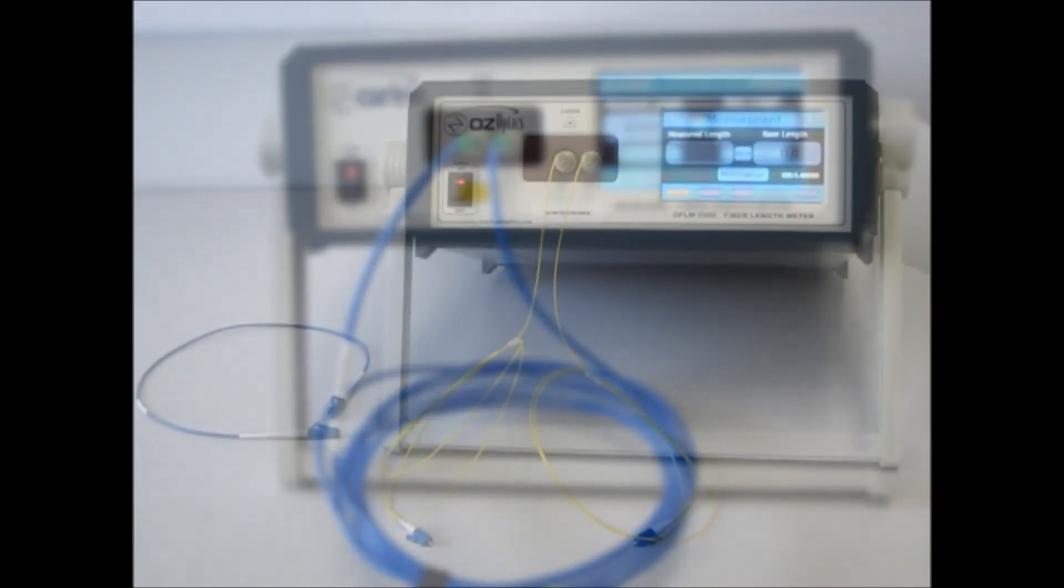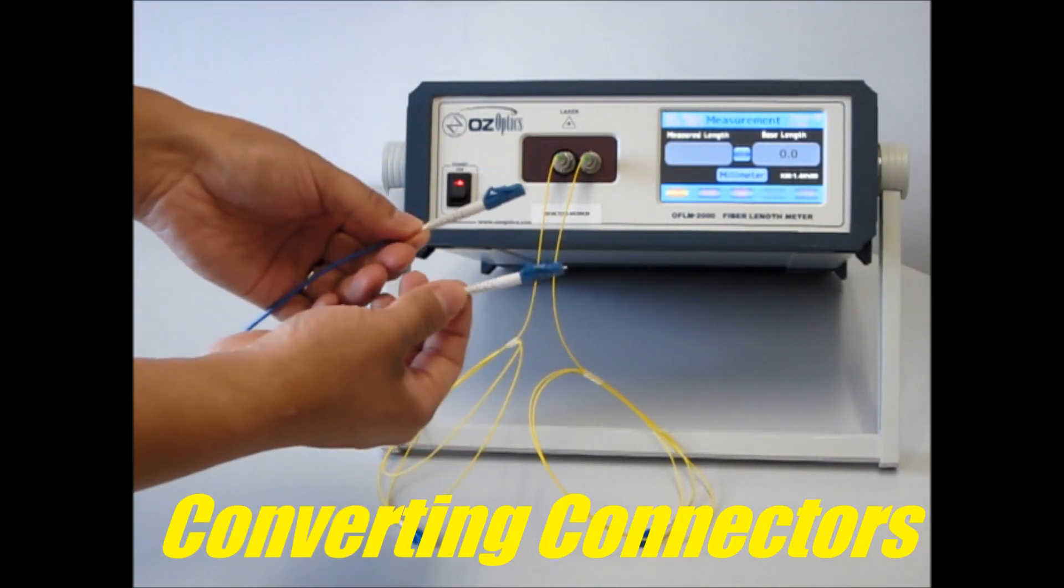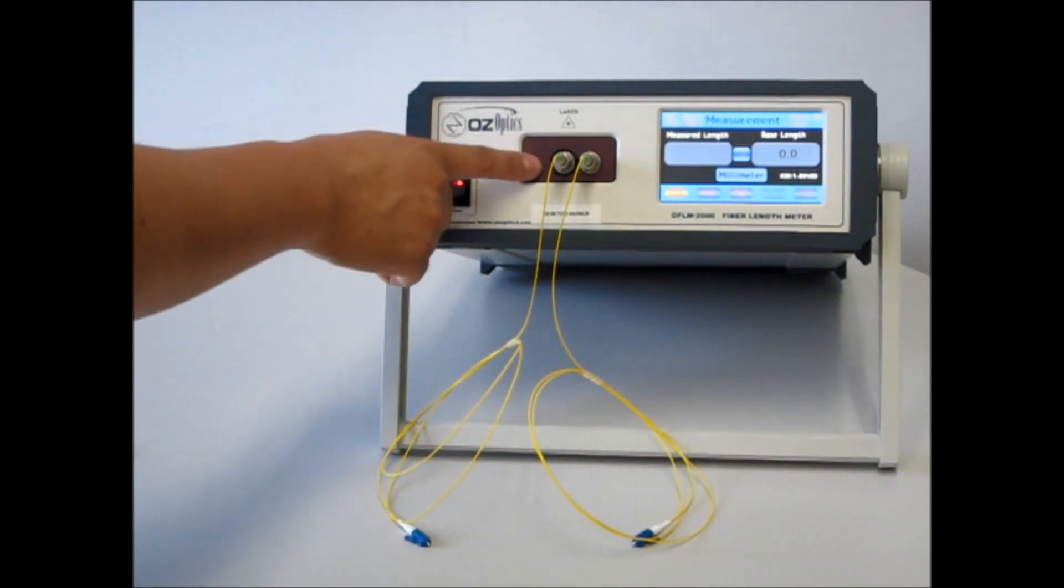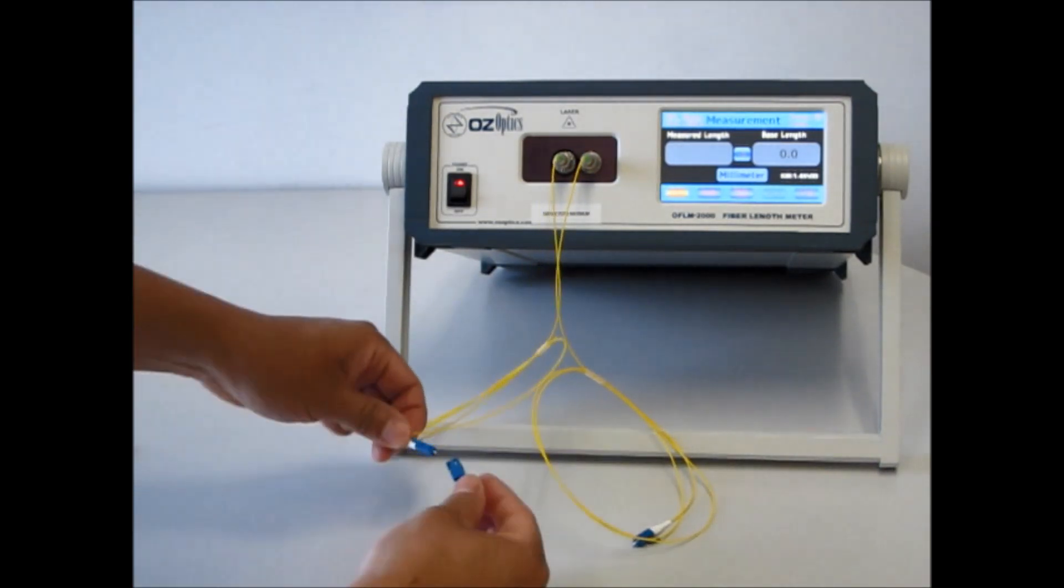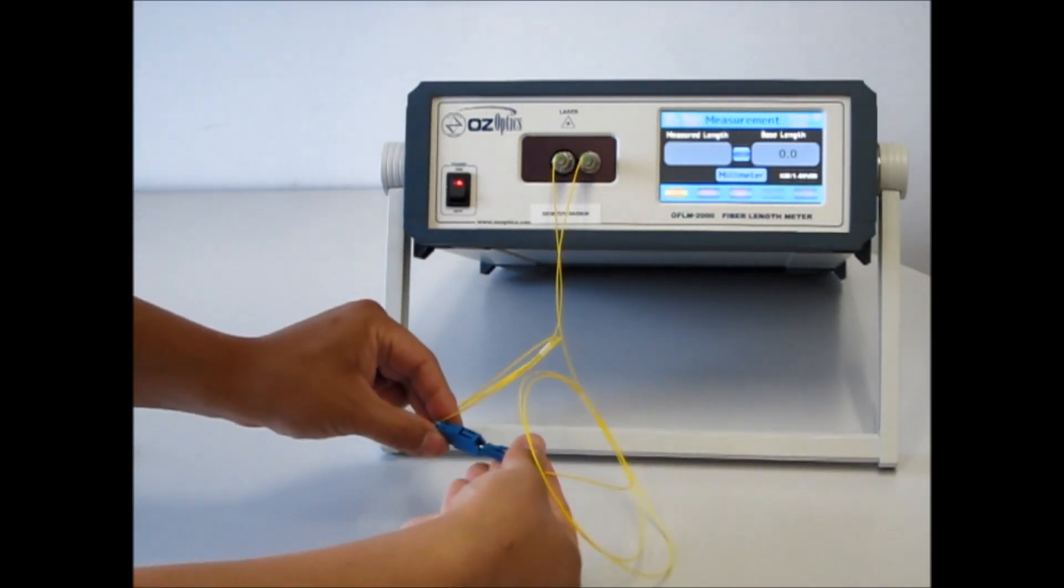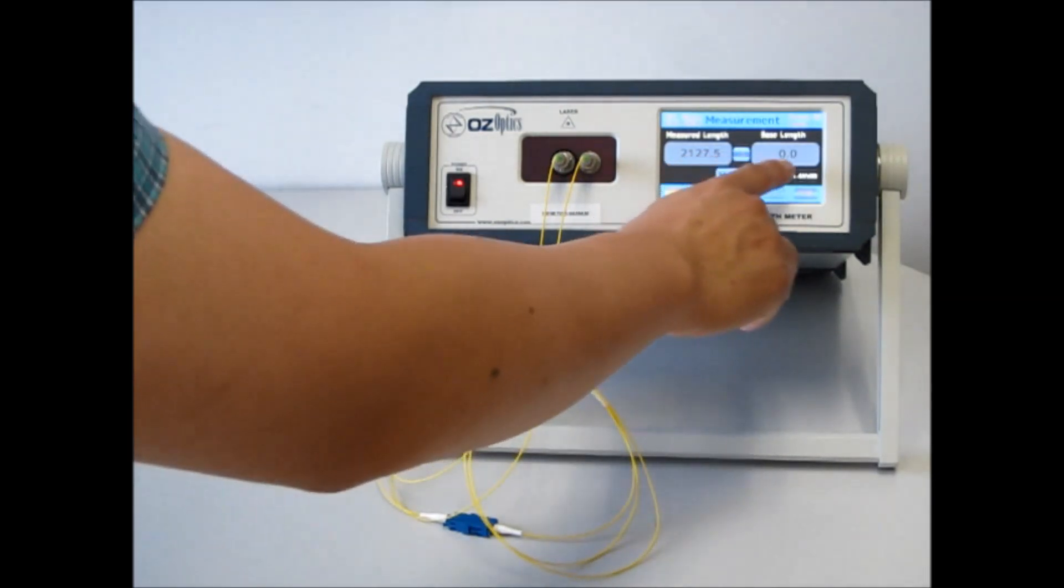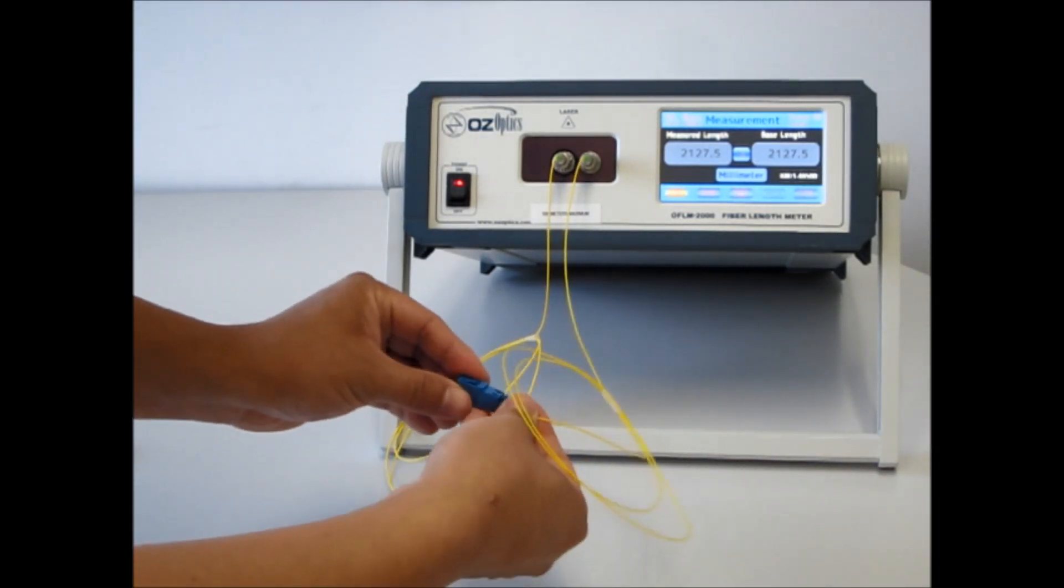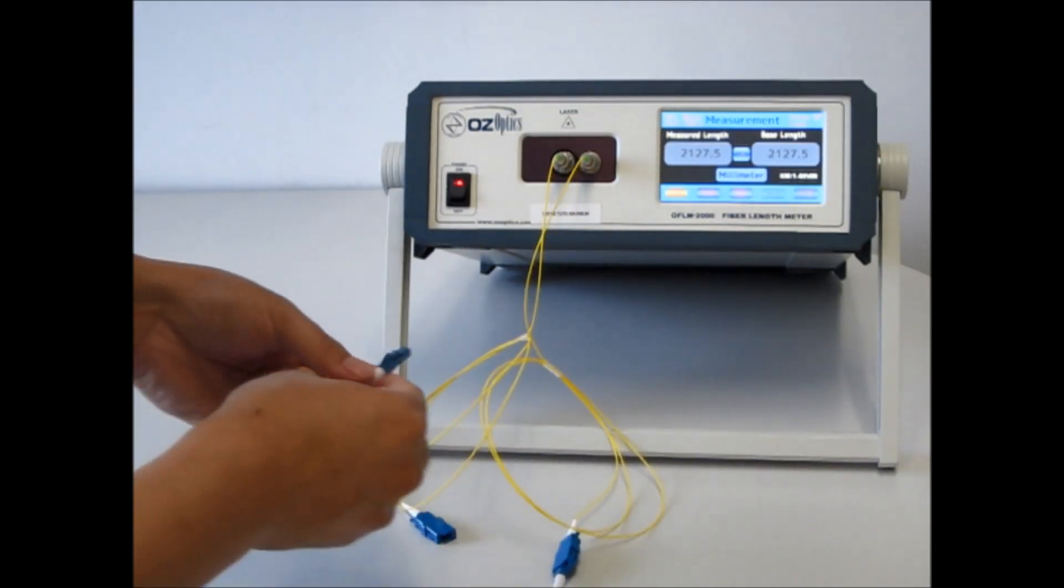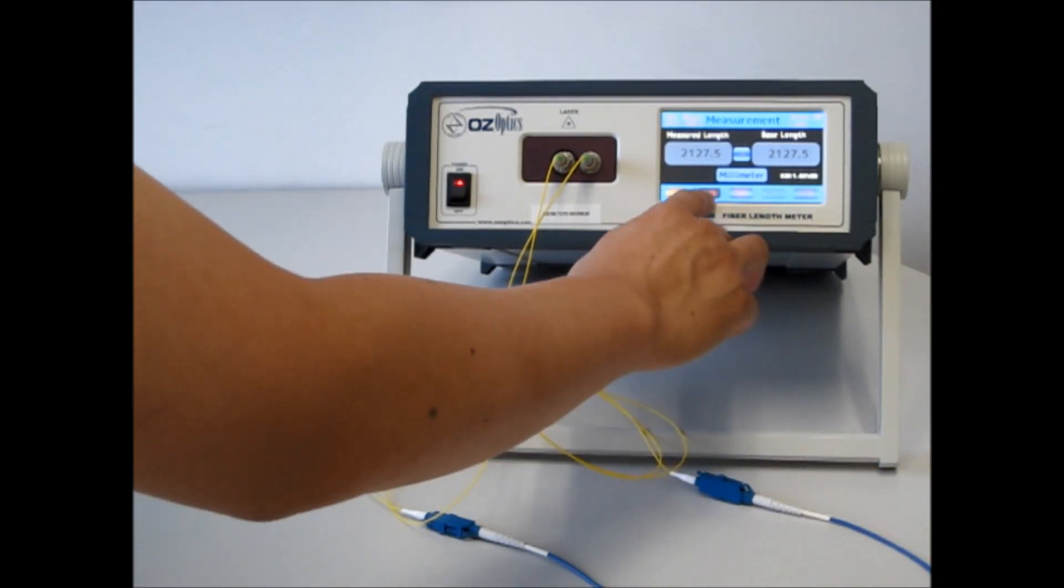Suppose you have a length meter with FC receptacles on both ends, like this one here, and you have a patch cord with different connectorization, like these ones here with LC. You can easily convert to the correct mating connector by using a hybrid patch cord. In this case, one end with an FC connector and the other end with an LC connector. We'll have to take a reference length measurement to zero out the extra fiber that we've added. We'll connect the two LC ends together and push the run button. We'll save this measurement as our base length and we'll unplug the two. We'll put a mating sleeve here and plug in the patch cord that we wish to measure. We push the run button and we can see that this patch cord is 534 millimeters long.